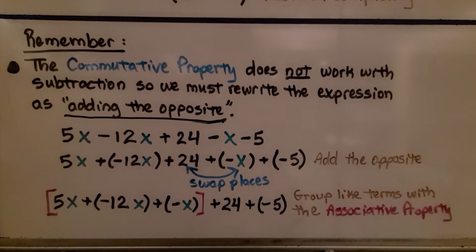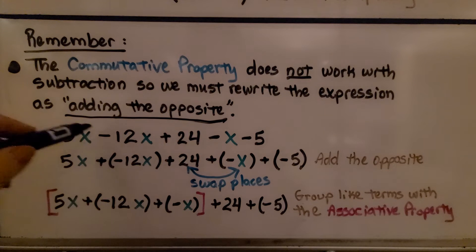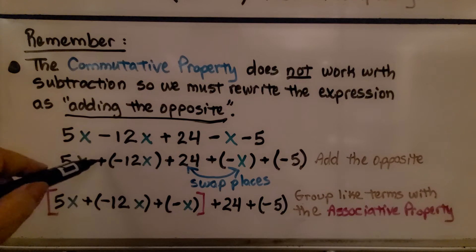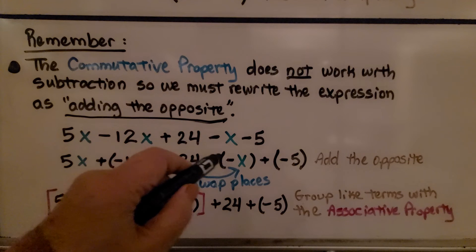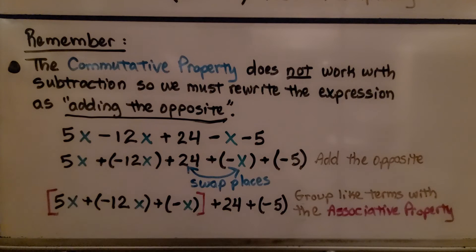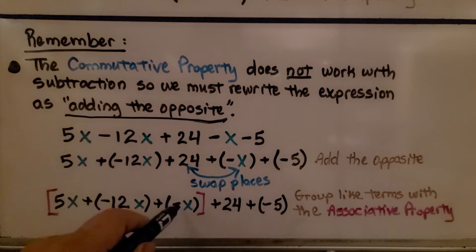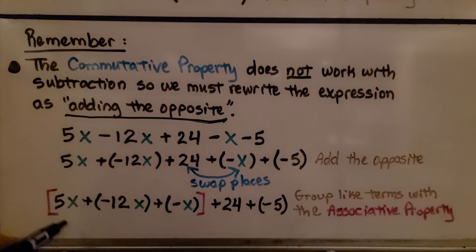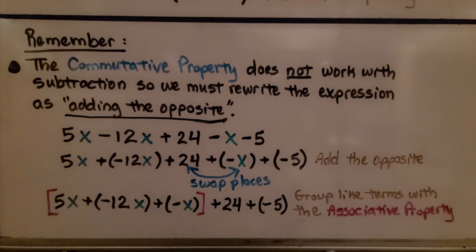Remember, the commutative property does not work with subtraction, so we must rewrite the expression as adding the opposite. When we see minus 12x, we change it to plus negative 12x. When we see negative x, we change it to plus negative x. When we see minus 5, we change it to plus negative 5. Now we can use the commutative property to rearrange so that the negative x is with the other x terms, and the 24 is with the negative 5. We then group the like terms using the associative property.